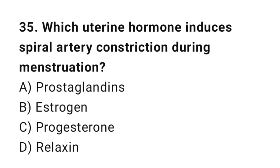Question 35. Which uterine hormone induces spiral artery constriction during menstruation? The right answer is B: Prostaglandins.